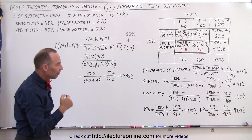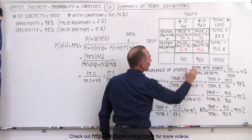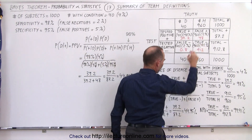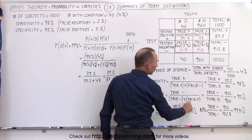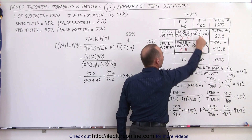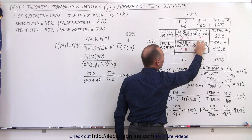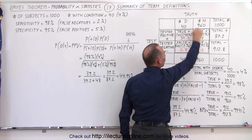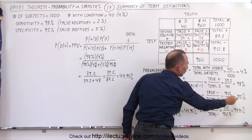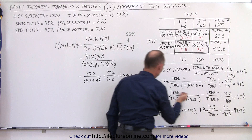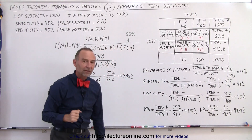Specificity is the ratio of the true negatives divided by the true negatives plus the false positives. So when we divide the true negatives by the total number that are healthy, that ratio is called the specificity of the test.